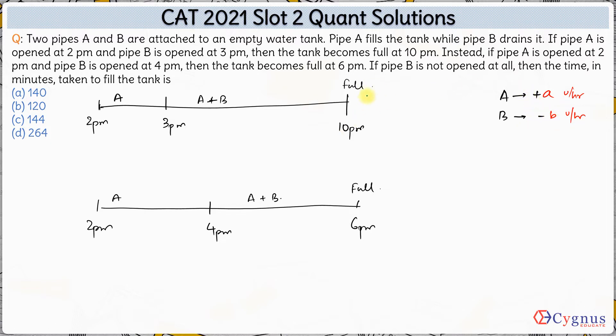Now in the first case total work done is how much? Total work done by A in the first 1 hour is 1 into A, and work done by A and B in the next 7 hours is 7 times of A minus B. Hence the total work done is 7A plus A, which is 8A minus 7B. This is the total work done in the first case.